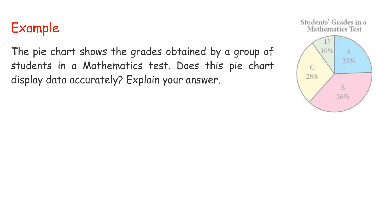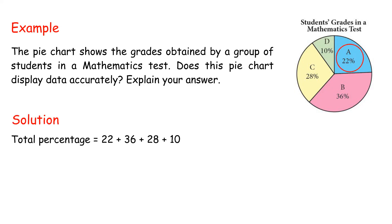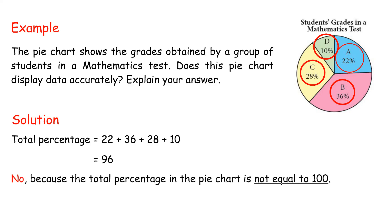Example: a pie chart shows the grades obtained by a group of students in a mathematics test. Does this pie chart display data accurately? Solution: total percentage = 22 + 36 + 28 + 10 = 96. No, because the total percentage in the pie chart is not equal to 100.